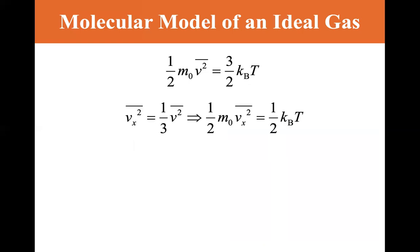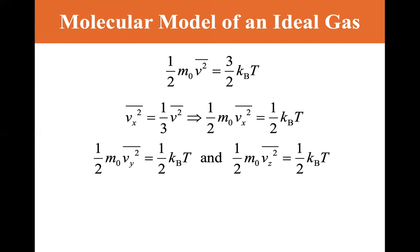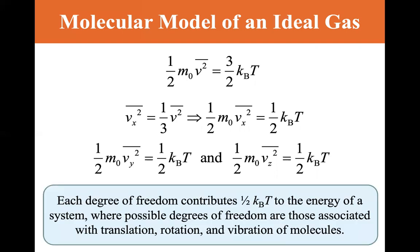The average v_x² equals one-third of v², which leads to one-half m₀ v_x² — the kinetic energy in the x direction — equaling one-half k_B T. The same holds for the y and z directions. This is the equipartition theorem: each degree of freedom contributes one-half k_B T to the energy of a system, where possible degrees of freedom include translation, rotation, and vibration of molecules. For a monatomic molecule, there is no vibration or rotation — only translation.